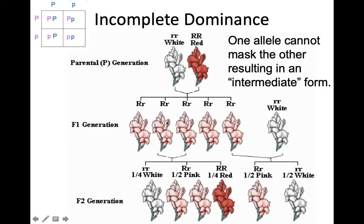They're kind of in between the two colors, so we call this incomplete dominance. When you see them kind of mixed together — that's how I like to think of incomplete dominance; it's a mixture of the two — and that's what we'd see from our heterozygous genotype. Now, if you still had little r, little r in an F2 generation, or if you had big R, big R, you would still see the same phenotypes of red and white. So instead of just having two phenotypes, we actually get three phenotypes from the three possible genotypes with incomplete dominance.